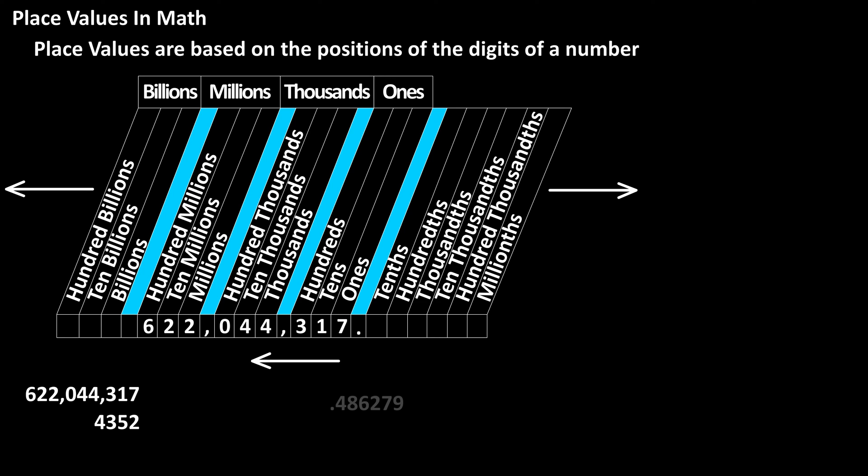As an example, the decimal number .486279. Four is in the tenths column, then eight in the hundredths column, and so on, to nine in the millions column.